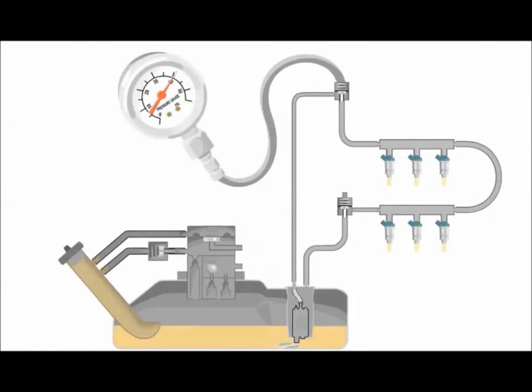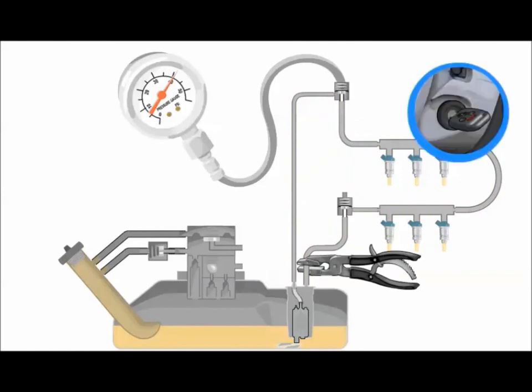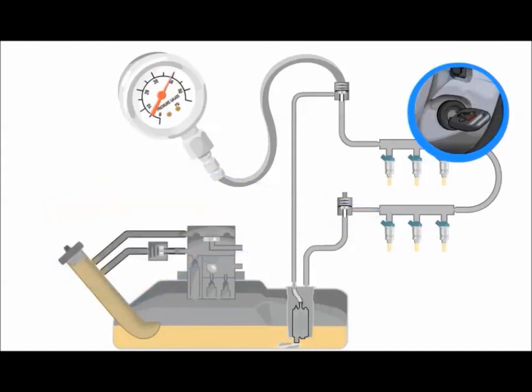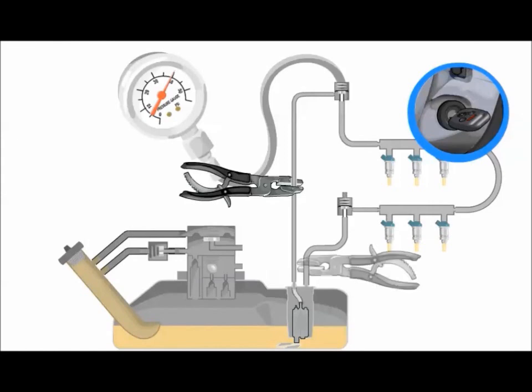First, inspect the lines for leaks. If none, pinch off the return line and recheck key off fuel pressure to see if it now holds. If it does, the regulator is the issue. If not, then remove the fuel rail and injectors together and check for leaking by turning the ignition switch to on. You can also check for leaky injectors by pinching off both the fuel inlet and return lines and then monitoring fuel pressure. If the injectors are okay, the fuel pump check valve is the issue and the pump will need to be replaced. Note that the check valve is an integral part of the fuel pump and cannot be separately replaced.